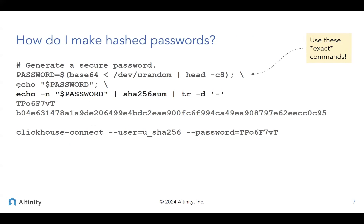One confusing thing people run into with this approach is how to get passwords generated. If you look inside the example users.xml file, it gives you a command — it's a gnarly command that basically creates a random password and runs it through a SHA-256 sum. That second value is the thing that actually gets stored in the XML file. You have to use these exact commands, otherwise it'll mess up. This is a little bit confusing and painful. In fact, there's a better way.